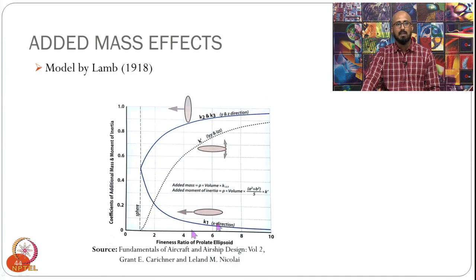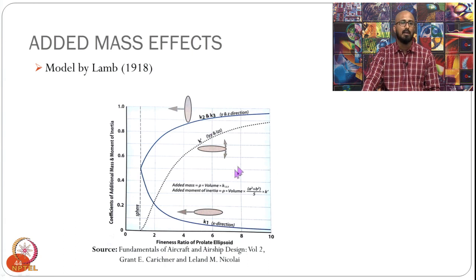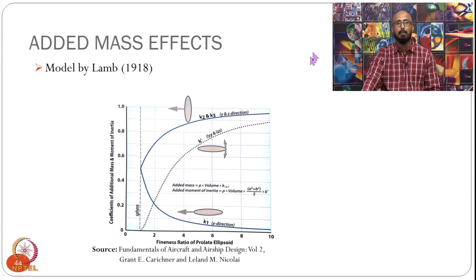This can be modeled using an empirical relation given by Lamb in 1918. As mentioned, these effects are predominantly important in buoyant vehicles like submarines, hot air balloons, and aerostats — where the displaced mass of air or fluid is comparable to the total weight of the system.